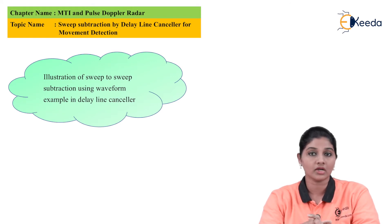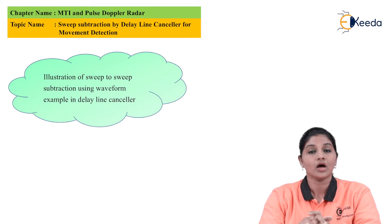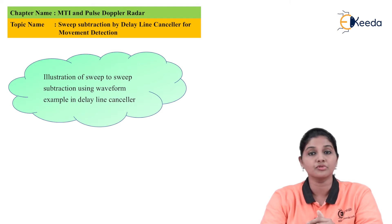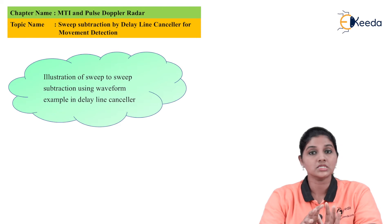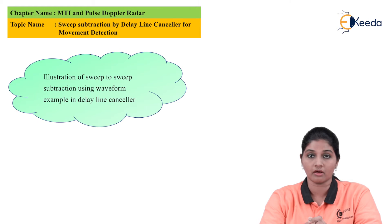In case of moving target indication radar, the delay line canceller is basically used to remove the clutters which are present at the output of the MTI radar. The output obtained at the receiver of the MTI radar is digitized by using the analog to digital converter and it acts as an input to the delay line canceller. The delay line canceller acts as a Doppler filter in case of MTI radar.